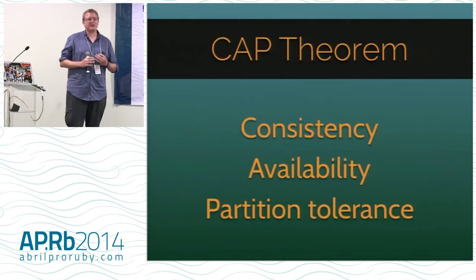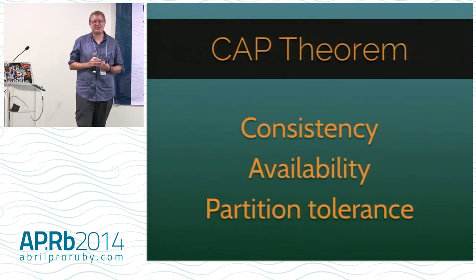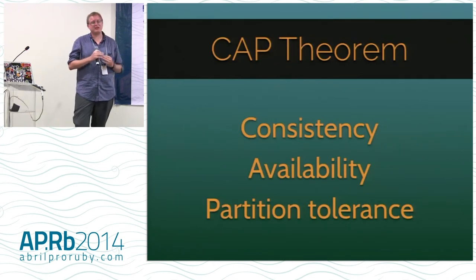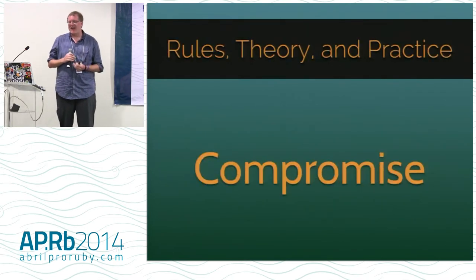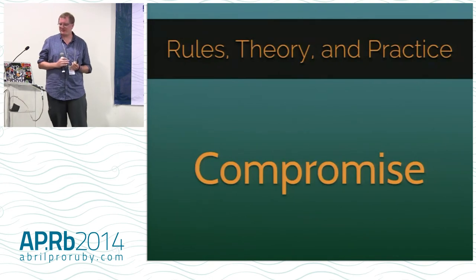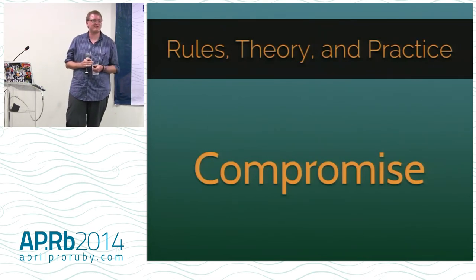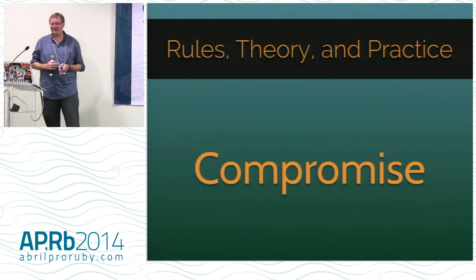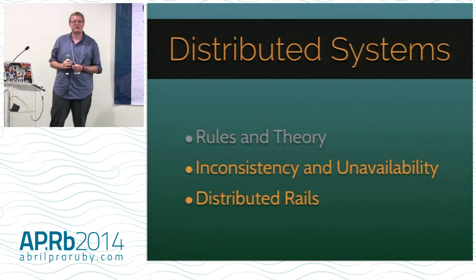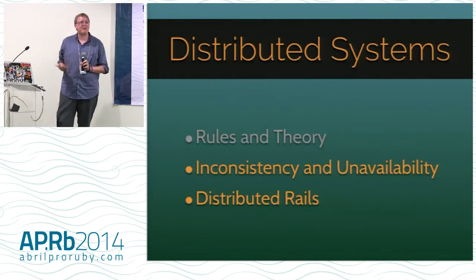The most important rule in distributed systems today is the CAP theorem. You have consistency, availability, and partition tolerance — and you can pick two, but you can't not pick partition tolerance. So you have to compromise. Everybody wants a reliable, consistent distributed system — I also want to play basketball like LeBron James and for the Tampa Bay Buccaneers to win the Super Bowl. That's not going to happen. That's the rules and theory of how distributed systems work. Next I'll be talking about the CAP theorem and what inconsistency and unavailability actually are.